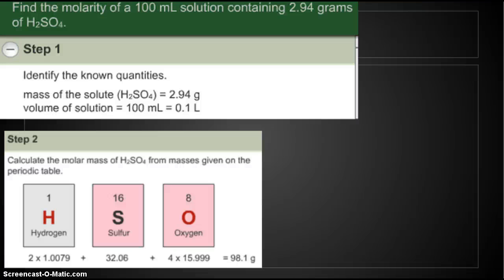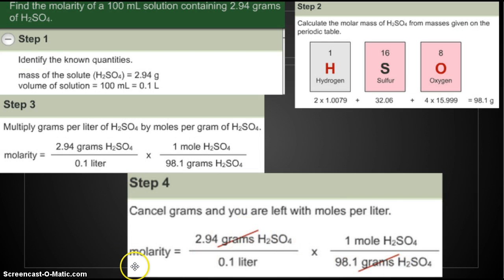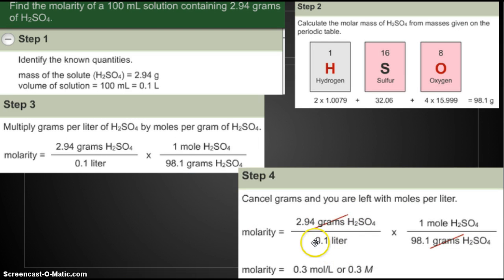We're going to calculate the molar mass of H2SO4 from the masses given on the periodic table, and we end up with 98.1 grams. And we change our 2.94 grams divided by the fact that there's 98.1 grams per mole. The grams cancel out. You're going to get 0.3 moles per liter. Personally, I think it's easier to get your moles first and then divide by your liters. But whatever works for you.